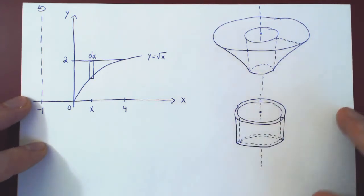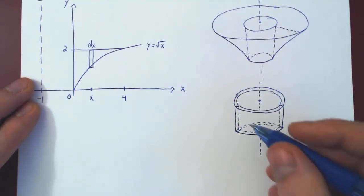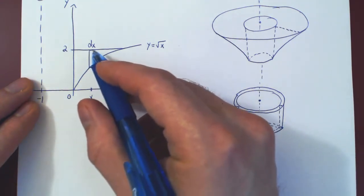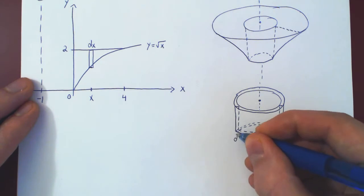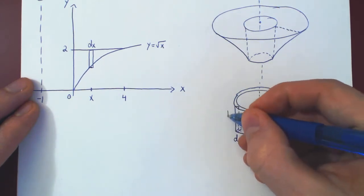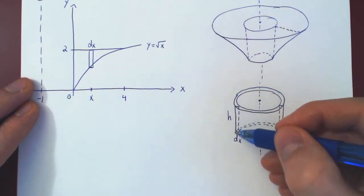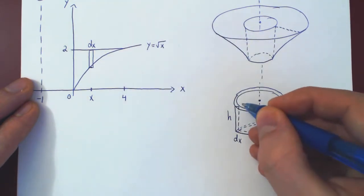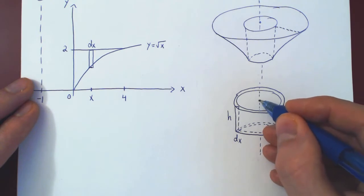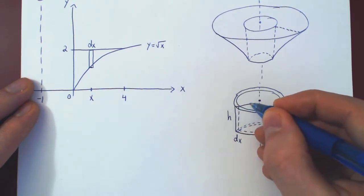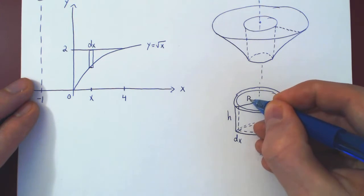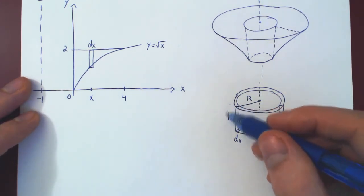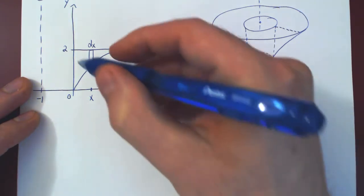To find the volume of this shell, we need three quantities. First, the thickness of our shell — this is the width of the rectangle, dx. Second, we need the height of our shell, which is the height of the rectangle. And then we need the radius of our shell, the distance between the center of the shell and the rectangle. Let's first find the height: the height of the cylindrical shell is the height of the rectangle.